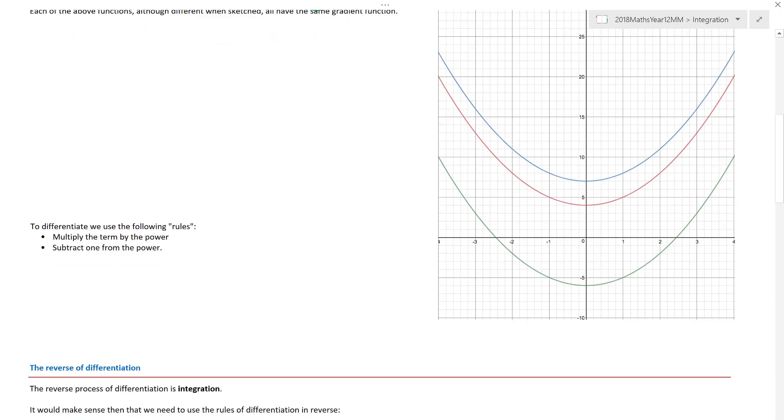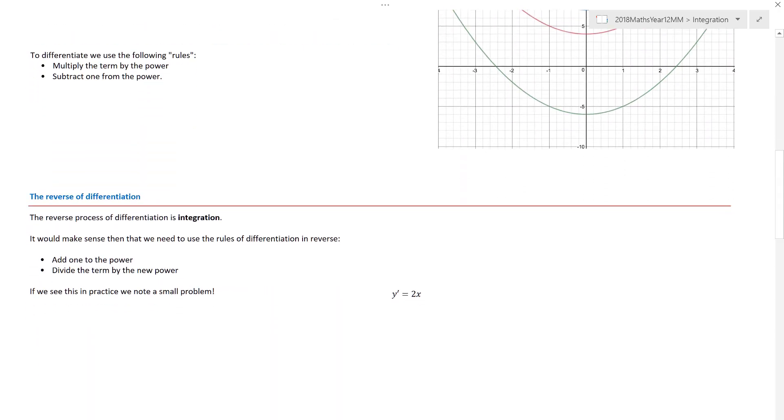Now, when we differentiate, you have to make sure that you remember what the rules were. And basically, for each of the individual terms, multiply the term by the power. So if we had x squared, that is my power. Multiply whatever in front by 2x. So that gave me 2x. And then subtract 1 from the power and 2 becomes 1. So that's the basics of differentiation.